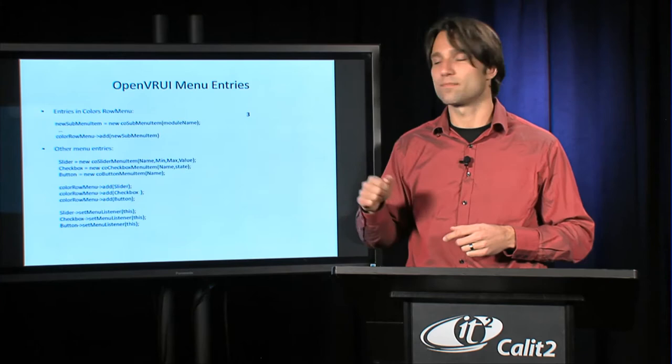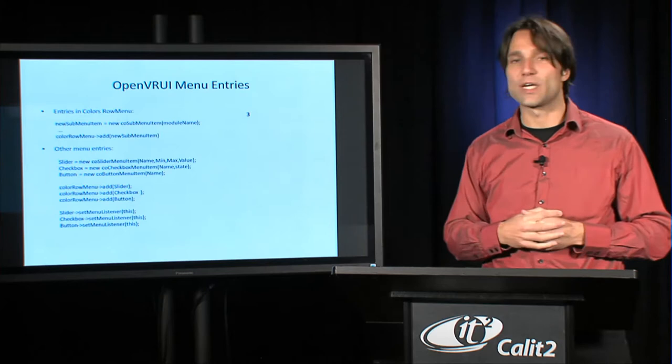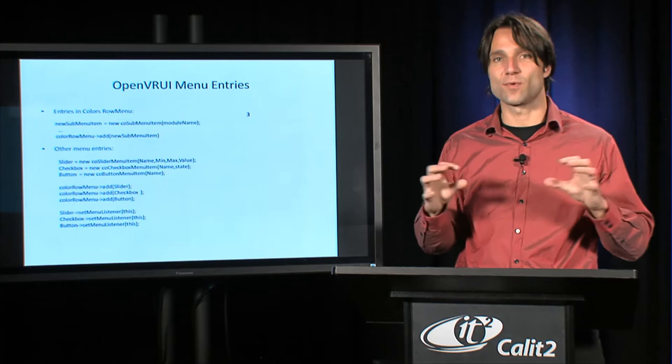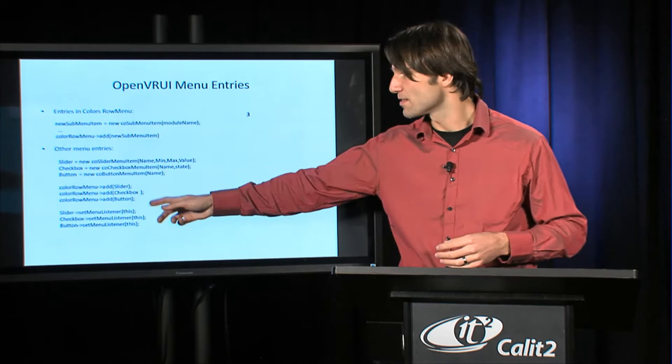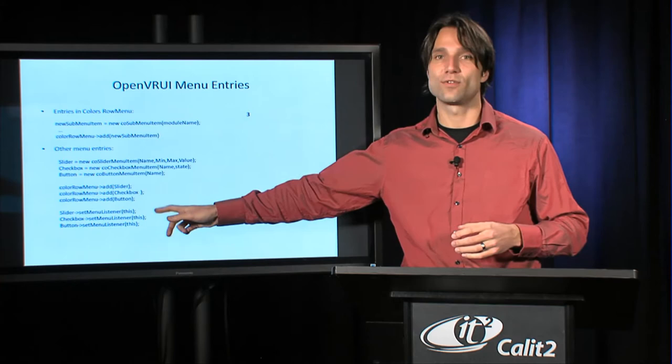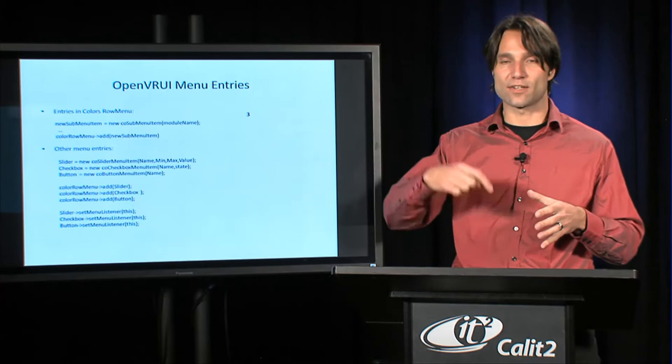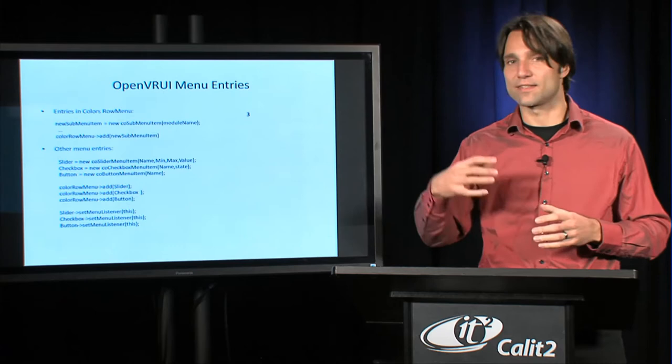We're looking at a slider menu item, a slider checkbox, and a button menu item. The button doesn't have an icon, it's just an entry without a checkbox, which means you can click on it and something can happen. All these items get added to the respective row menu with these three lines. The last three lines are about connecting the interaction handler to these menus. This is where you make sure that when you actually click, you get the callback function that you write for this respective menu item.